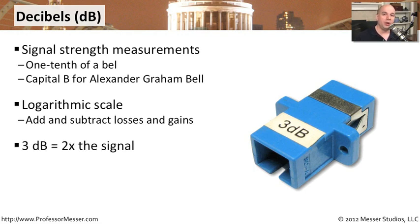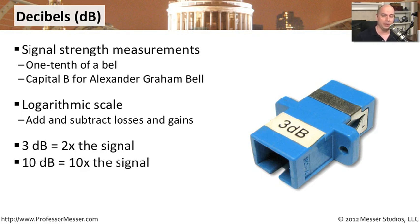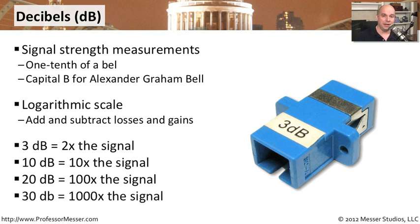Let's look at how this logarithmic scale works. A difference of 3 dB means the signal is two times as strong or two times as weak, depending on whether it's a gain or a loss. If the difference is 10 dB, that's a 10 times difference in the signal. At 20 dB, there is a 100 times difference in the signal. And at 30 dB, it's a 1,000 times difference. We take these dB measurements and apply them back to this logarithmic scale, and all calculations will be in decibels.